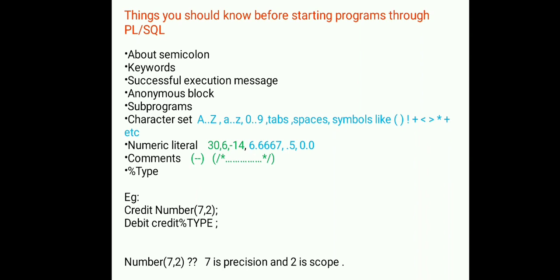Anonymous blocks are unnamed blocks declared at the point in the application where they are to be executed and passed to PL/SQL. Named blocks, known as subprograms, can accept parameters and be invoked. They can be declared as a procedure or a function. Generally, procedures are used to perform an action, while functions are used to compute a value — this is the basic difference between them.